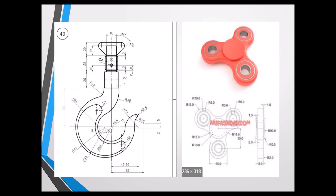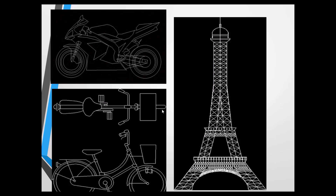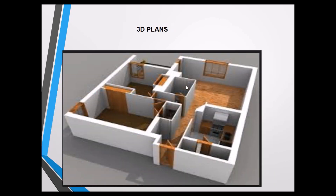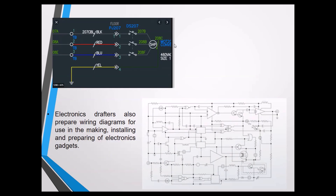Some examples of AutoCAD drawings: a hook drawn by specifying distances and arc circles; various 2D sketches with colors applied; civil engineering plants drawn in 2D; 3D plant models; and for electrical engineering, wiring diagrams and electronic circuit characteristics drawn using AutoCAD. This completes the overview of the AutoCAD software. Thank you.